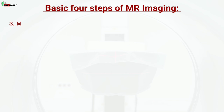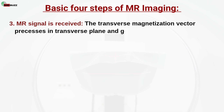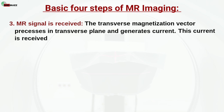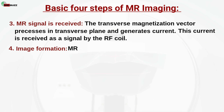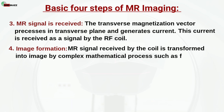Step 3 — MR signal is received: The transverse magnetization vector precesses in the transverse plane and generates current. This current is received as a signal by the RF coil. Step 4 — Image formation: The MR signal received by the coil is transformed into an image by a complex mathematical process such as Fourier transformation by computers.